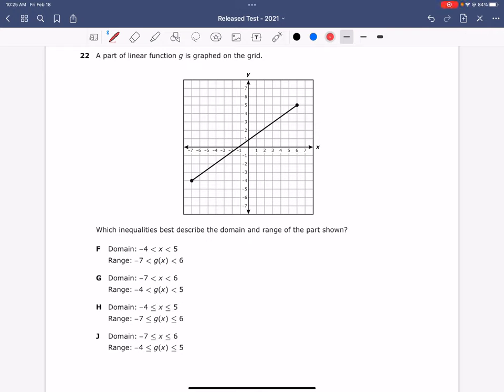A part of linear function g is graphed on the grid. Which inequalities best describe the domain and range of the part shown?